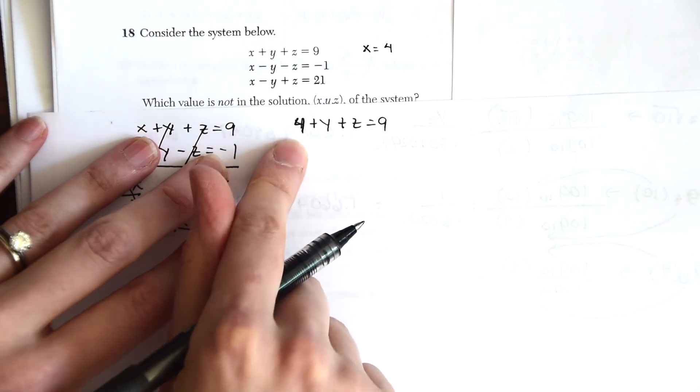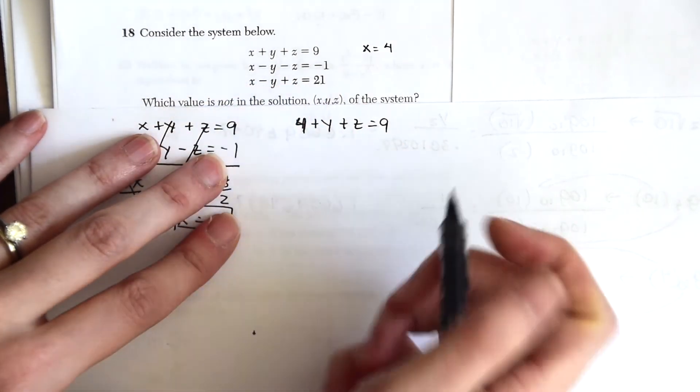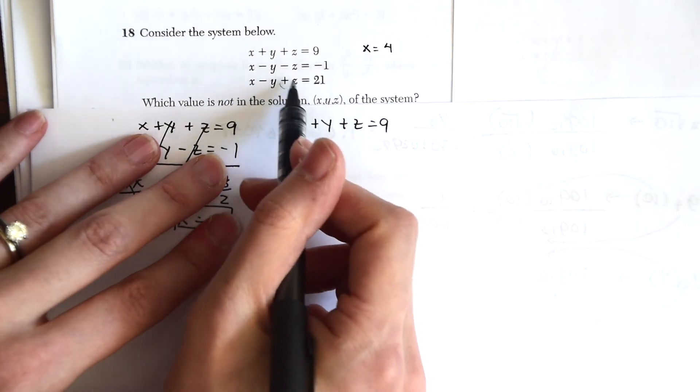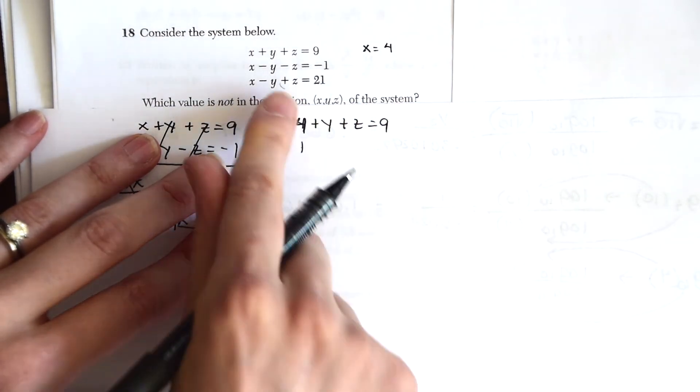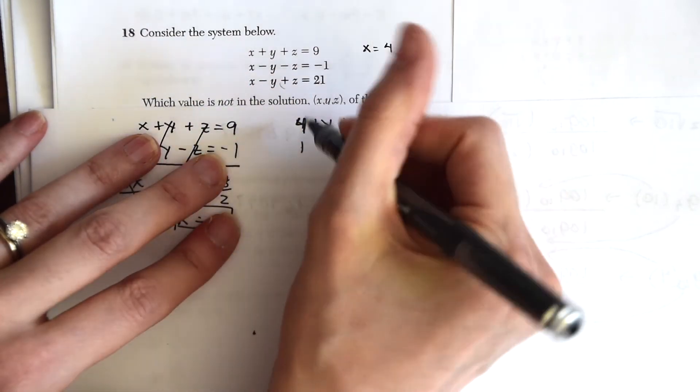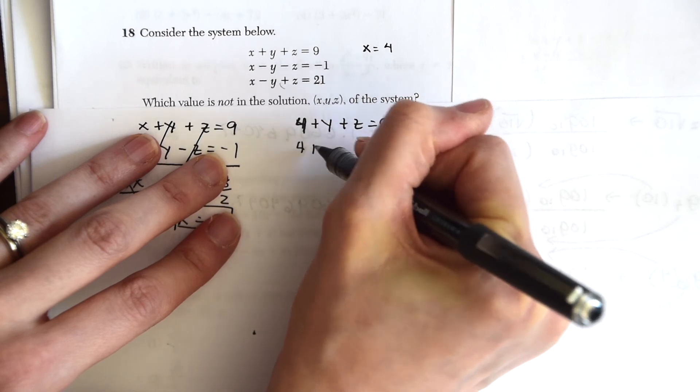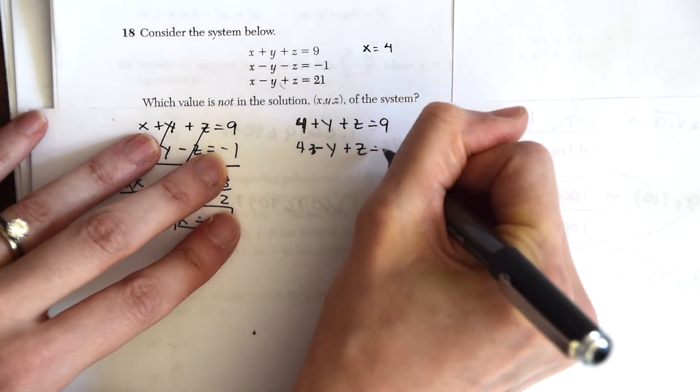So we're going to take the first equation, but now plugging in 4 for x, 4 + y + z = 9. And let's take the last equation because then we could add the z's together. Notice this is a positive z, so we know that we'll be able to find a value of z here. So we're plugging in 4 for x, and this time it's minus y, so the y's are going to cancel out, and then plus z equals 21.